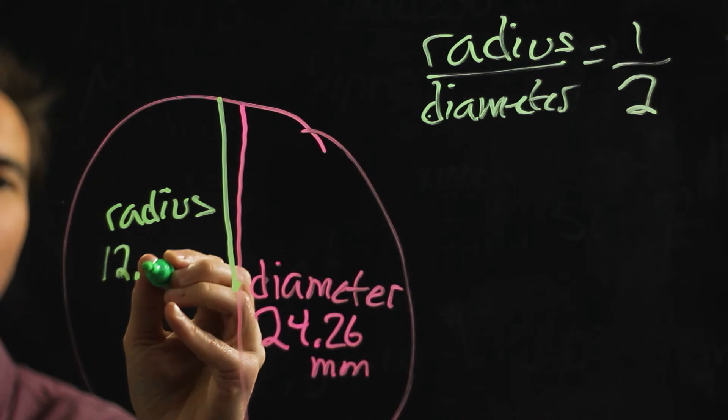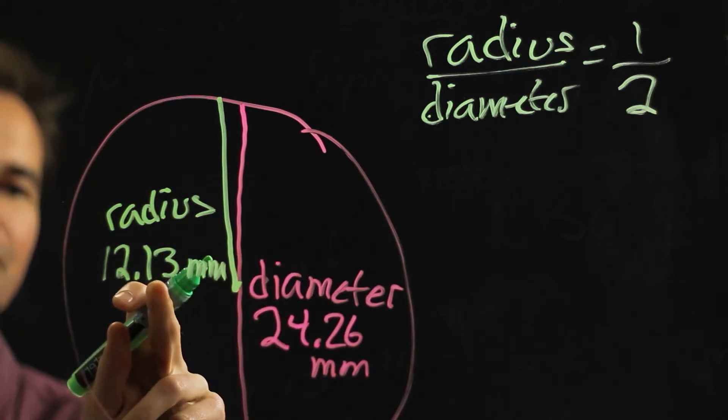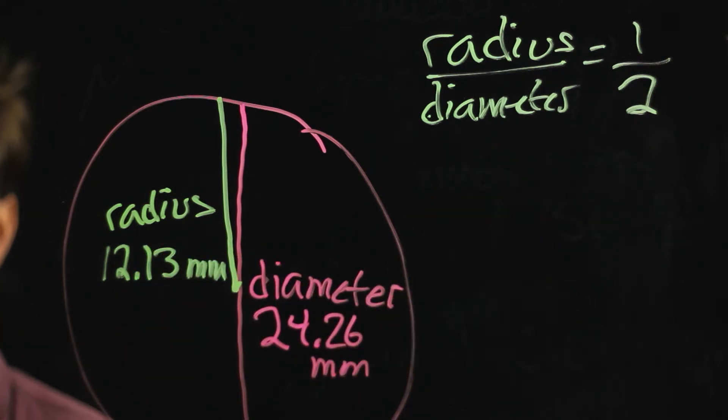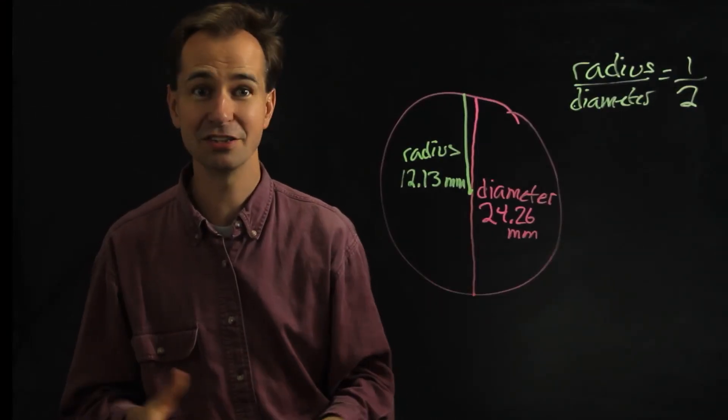12.13 millimeters. So if you divide those two by each other, it's exactly one half, and it works that way for any circle.